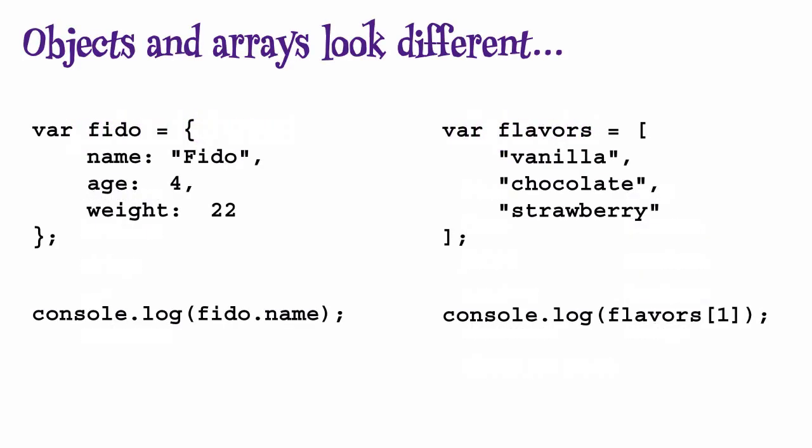As you're learning about objects and arrays, it might seem like these are two totally different things. An object is a collection of properties, while an array is a collection of values ordered by an index. We use different syntax to access the properties of an object and the values in an array.